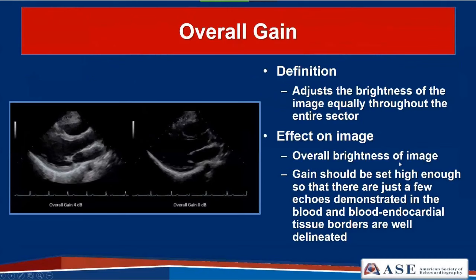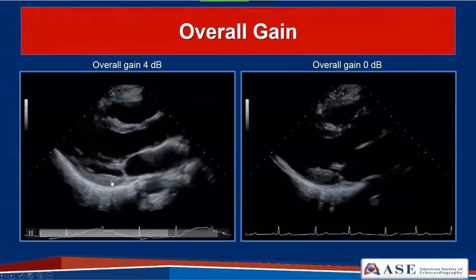Next, overall gain is an instrumentation control that adjusts the brightness of the image equally throughout the entire sector. The gain should be set just high enough so that there are just a few echoes demonstrated in the blood, and the blood-endocardial tissue borders are well delineated. This is an appropriately gained image at 4 decibels compared to an undergained image, where you see the loss of detail in discerning blood-endocardial tissue borders.